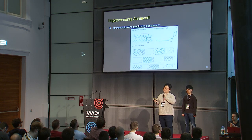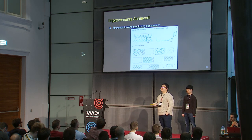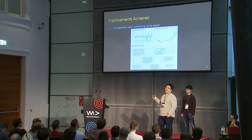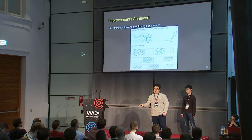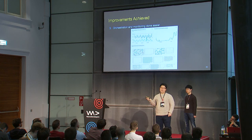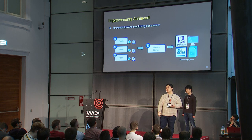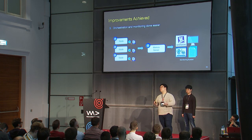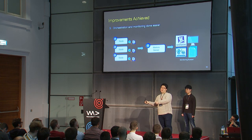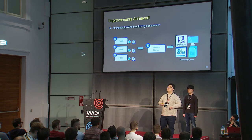The last improvement is monitoring. Kubernetes can export its metrics in a standardized manner through a feature called the Metrics API. You can integrate a monitoring service like Prometheus or Grafana, or even a commercial monitoring system, to achieve powerful monitoring with less effort.